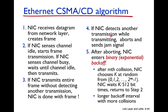But if the NIC detects another transmission — that is, detects a packet collision while transmitting — then it aborts and stops transmission, and sends a jamming signal. The jamming signal informs other nodes that there has been a collision, so other nodes should not transmit. When a node detects a collision, it stops transmission and sends the jamming signal.